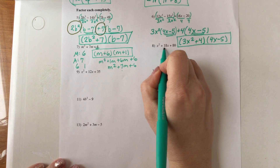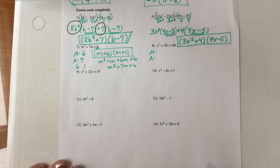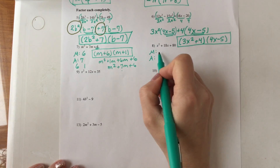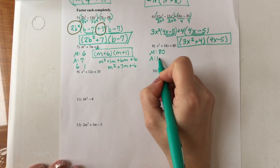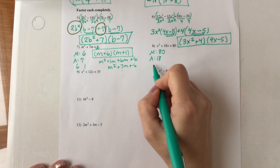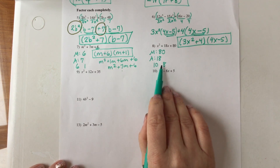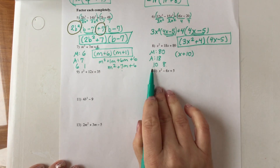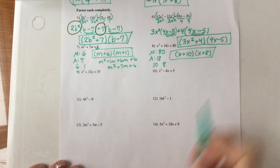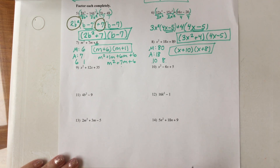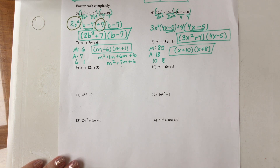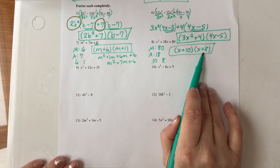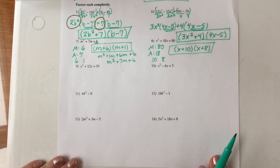Number 8 has 3 terms, so it's the multiply-add method. There is not a number in front, so I need two numbers that multiply to positive 80 and add to 18. That's 10 and 8: 10 times 8 is 80, 10 plus 8 is 18. My variable is x, so factored is (x + 10)(x + 8). A common question: would it be okay to write (x + 8)(x + 10)? Absolutely — the commutative property of multiplication says you can multiply in any order. The main thing is that your two numbers are positive 10 and positive 8.